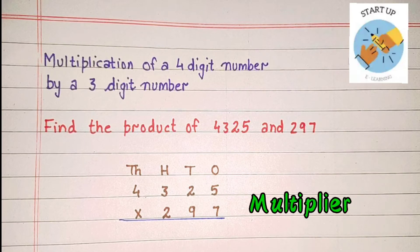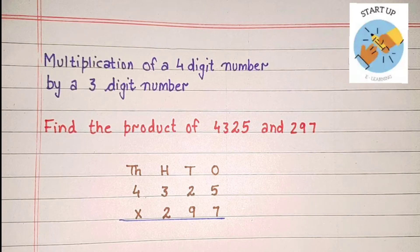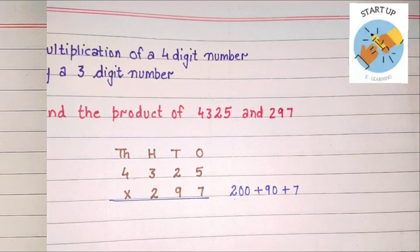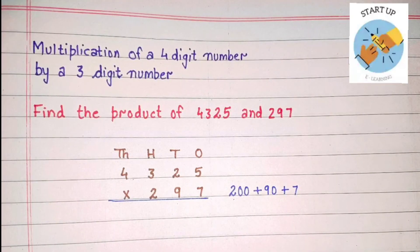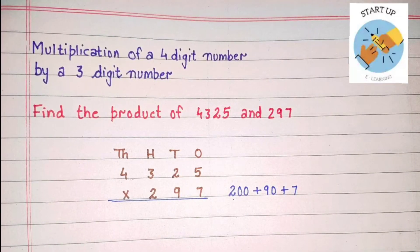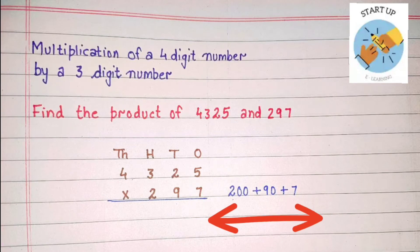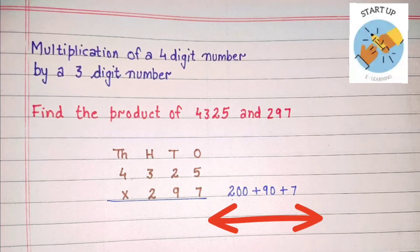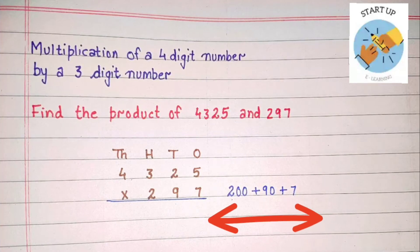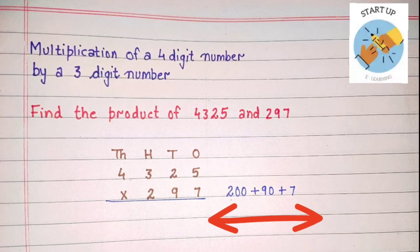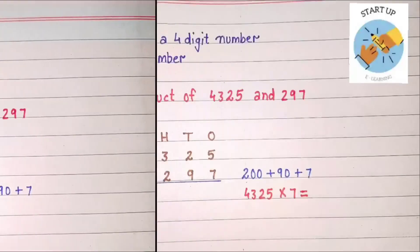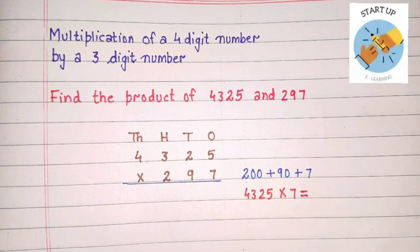In this question, 4325 is the multiplicand and 297 is the multiplier. We always start our multiplication from ones place, but first we will expand the multiplier: 200 plus 90 plus 7. We will multiply 4325 by 7 first.